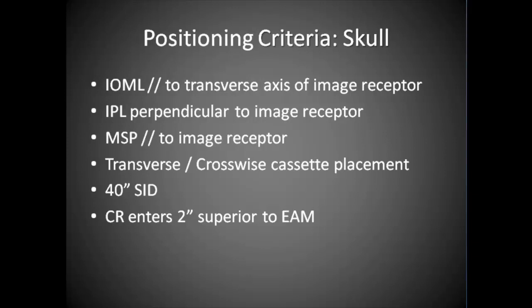We need the infraorbital meatal line parallel to the transverse axis of the image receptor. Whether you're using DR, CR, or plane film, we need it parallel to the horizontal border. We need the interpupillary line perpendicular to the image receptor — if not, it will have rotation. We need the mid-sagittal plane parallel; if it's not parallel, you're going to have tilt, rotation, all sorts of problems.